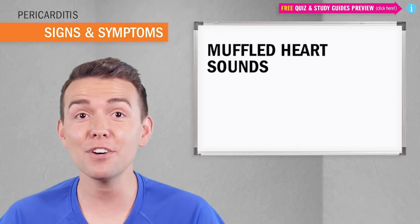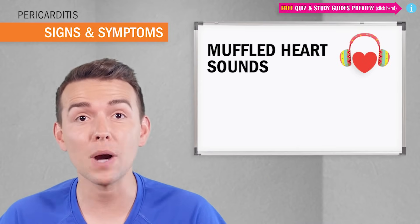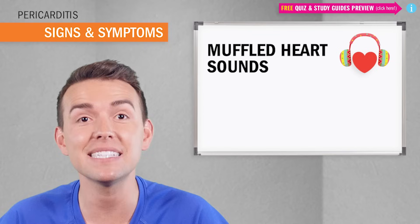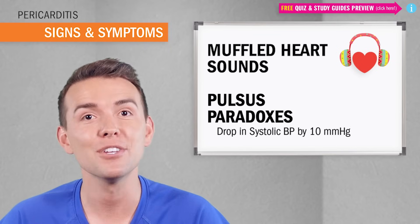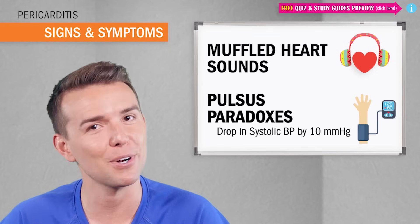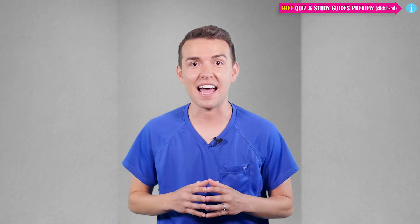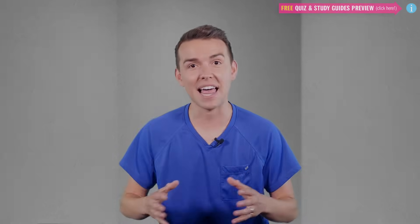Now again, monitor for muffled heart sounds and a drop in systolic blood pressure by 10 points, known as pulsus paradoxus. So now that we know the signs and symptoms, let's take a look at what we can't see with the naked eye: the common labs.